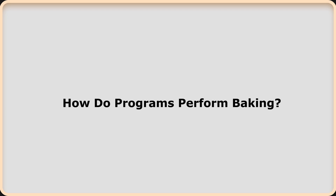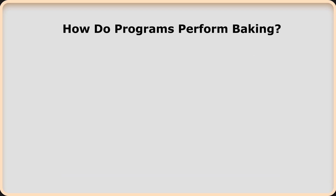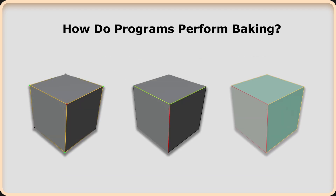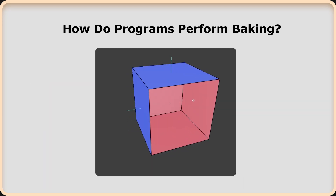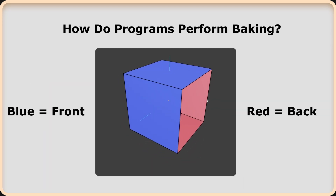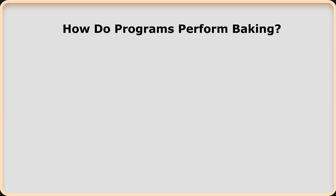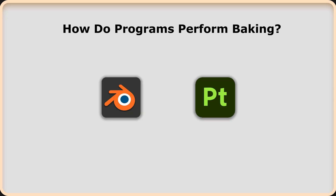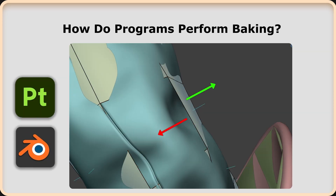How do programs perform baking? Today's polygon technology consists of vertices, edges, and faces. Each surface has a normal direction that determines its front and back. Programs with baking tools such as Blender or Substance Painter send rays at certain distances between the surfaces to calculate the normal directions of high polygon surfaces, the dense or sparse areas of polygons, and the hollow or raised parts of the model. The results are then transferred to a 2D UV map.